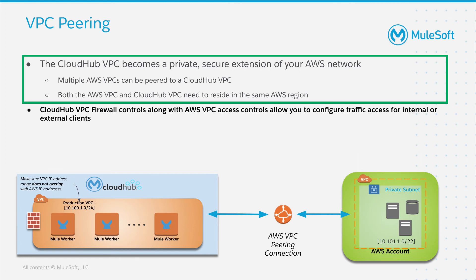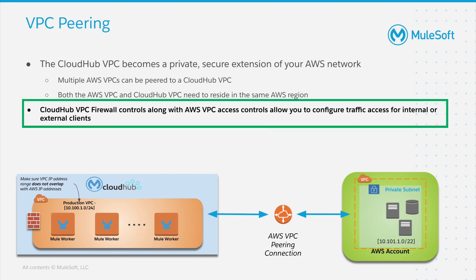For MuleSoft customers that are also using AWS, CloudHub does support VPC peering connections. VPC peering provides a connection between two VPCs — in this case, it pairs your private Amazon VPC directly to your Anypoint VPC. This enables you to route traffic between two VPCs so that they can communicate as though they are in the same network. The CloudHub VPC becomes an extension of your AWS network. You control the internal destinations that are reachable from CloudHub with your AWS VPC access control for the CloudHub IP range. You control internal client access to CloudHub with the CloudHub VPC firewall controls, and you also control external client access to CloudHub with CloudHub VPC firewall controls.